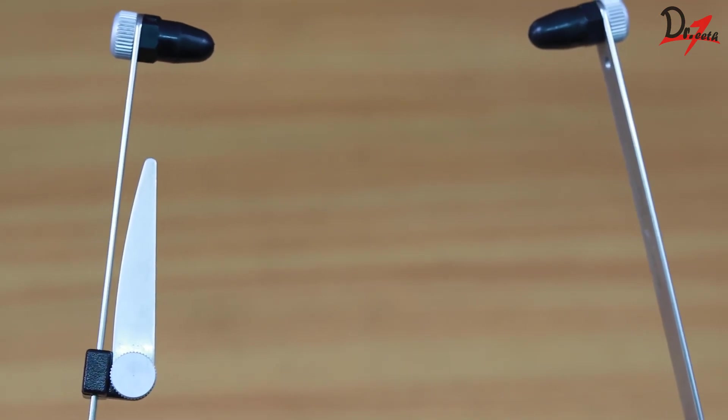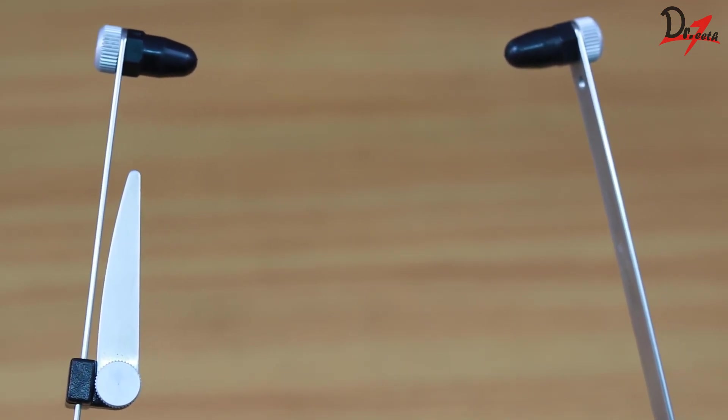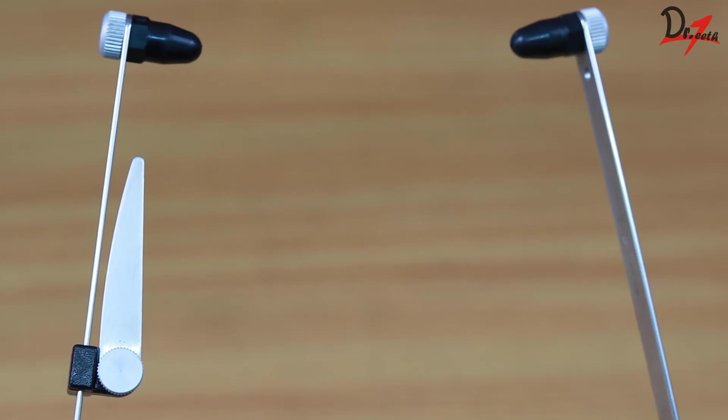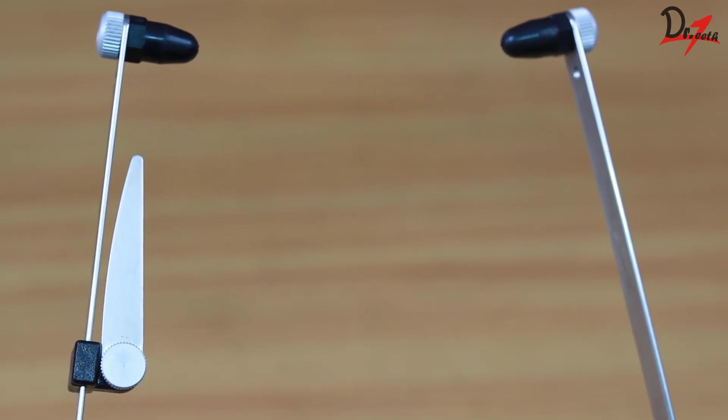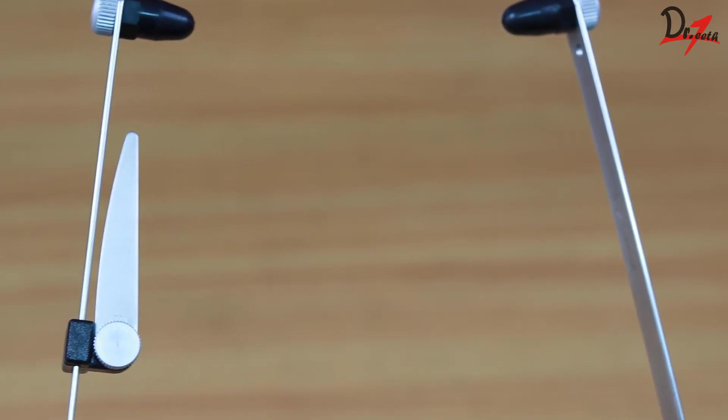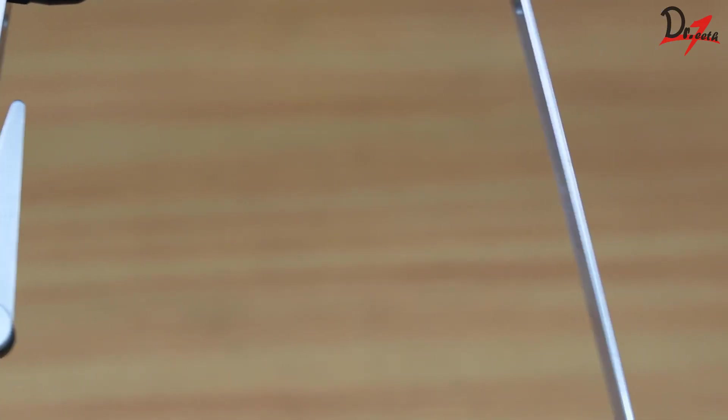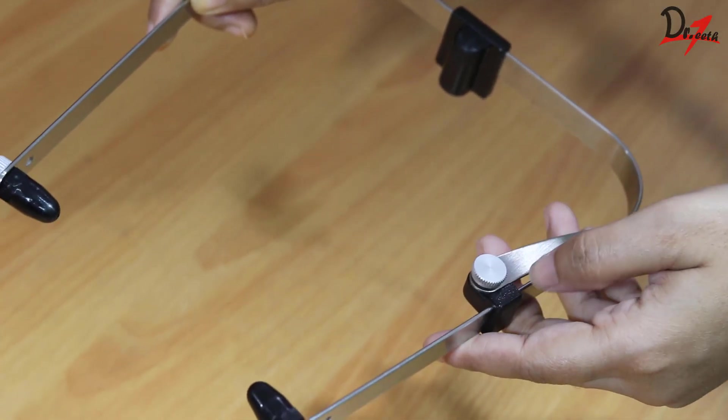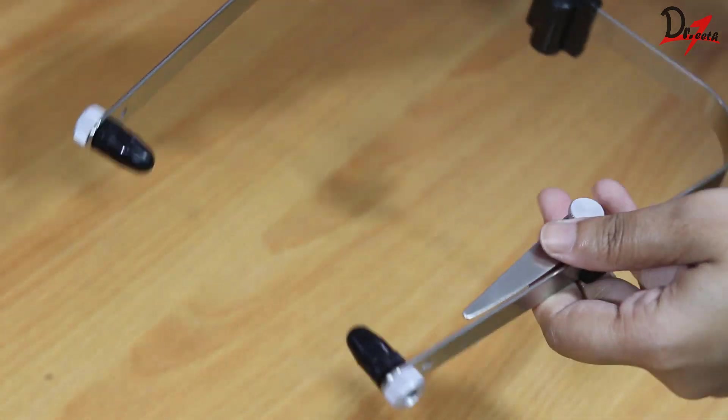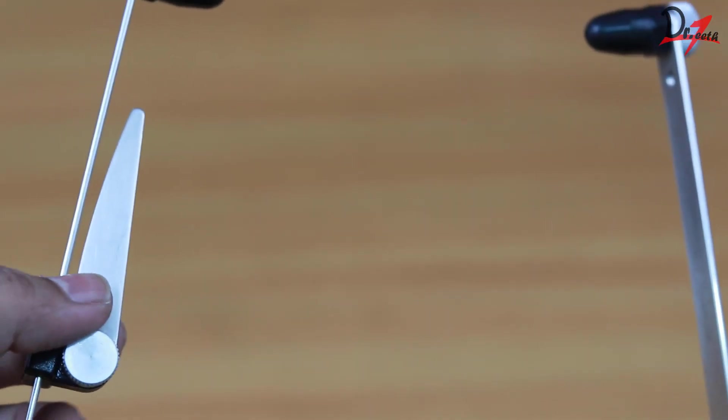So this one is the arbitrary face bow, not a kinematic. Kinematic face bows are the ones which can record the true hinge axis of the patient, and the design is a bit different. They have condylar rods, I believe. Just let's not go into that much detail because this is just unboxing and first impression.